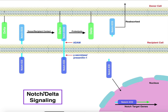In Notch-Delta signaling, here are the basics. We have a protein called Delta and a protein called Notch. There are two cells here — this isn't a double membrane, these are two different cells. The cell up top is the donor cell — in some texts you may see it written differently — but this is the effector cell that is going to affect another cell. The donor cell is going to exert an effect on the recipient cell down here.